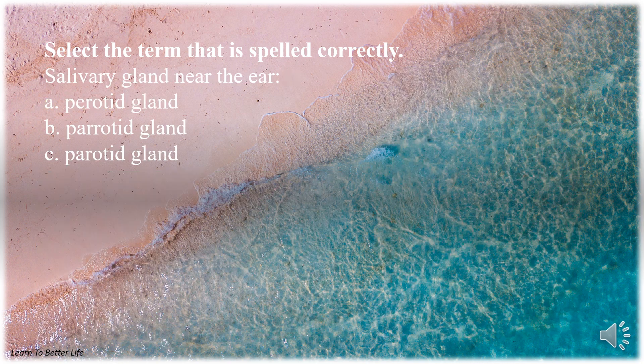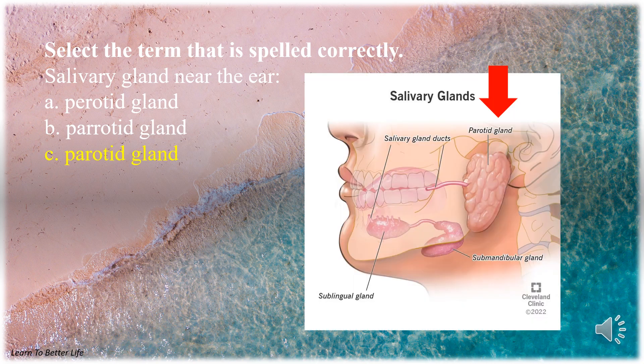Select the term that is spelled correctly. Salivary gland near the ear. A. Parotid gland. B. Parrotid gland with two R's. C. Parotid gland with one R. The answer is C. Parotid gland with one R.